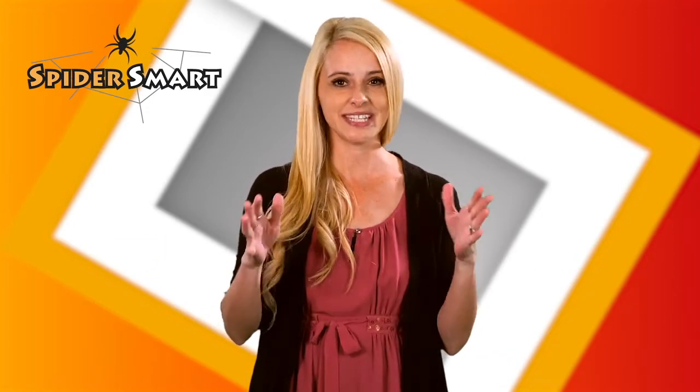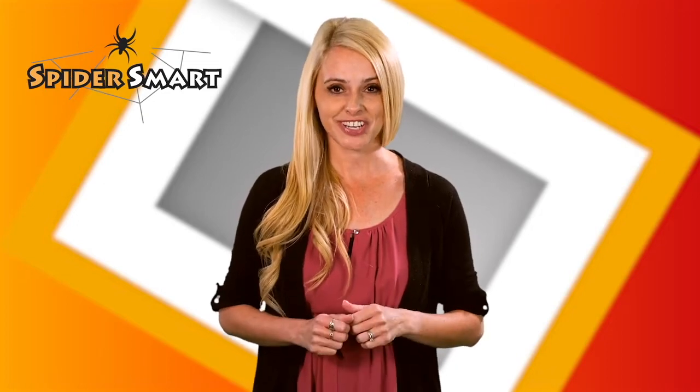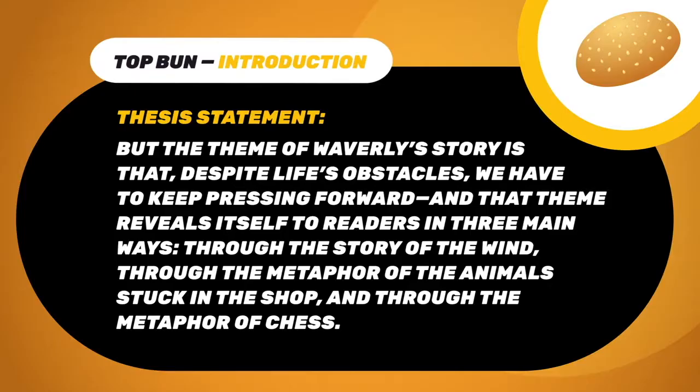We'll start by reshaping our thesis statement into different words to remind readers of what our main point was. Remember, way back in his introduction, Preston's thesis statement was this: the theme of Waverly's story is that despite life's obstacles, we have to keep pressing forward, and that theme reveals itself to readers in three main ways — through the story of the wind, through the metaphor of the animal stuck in the shop, and through the metaphor of chess.